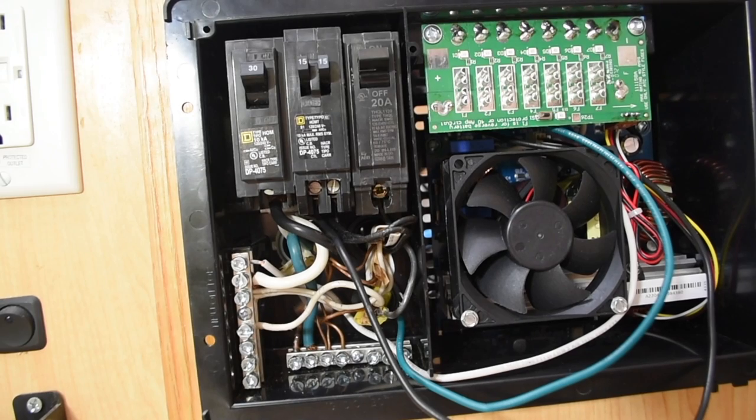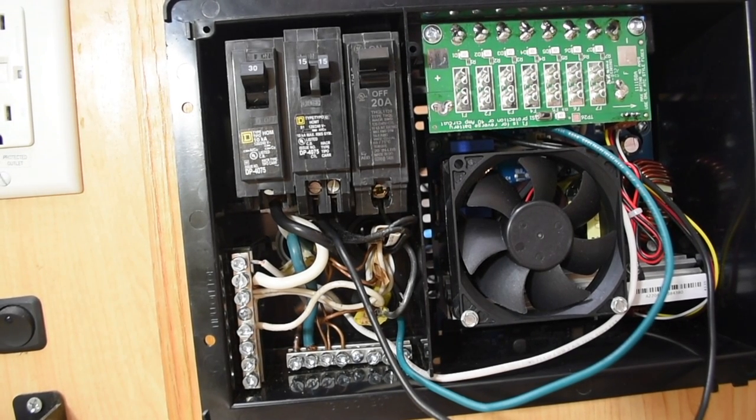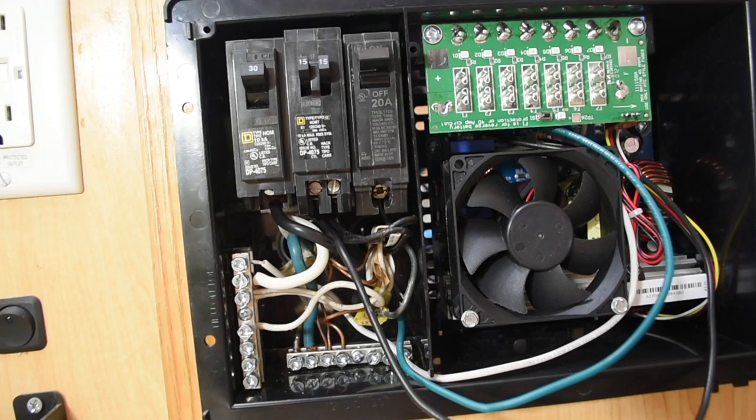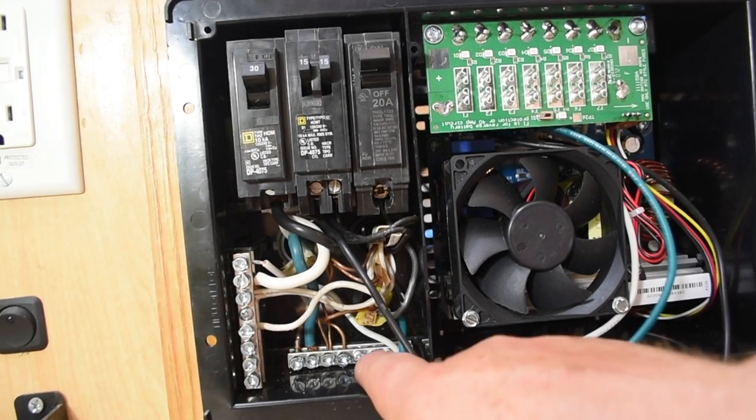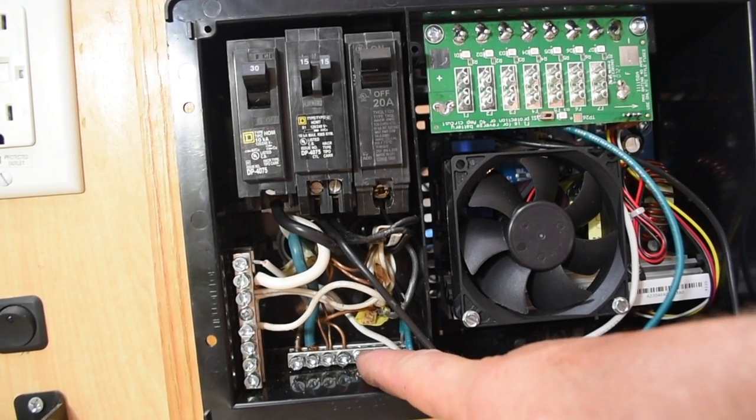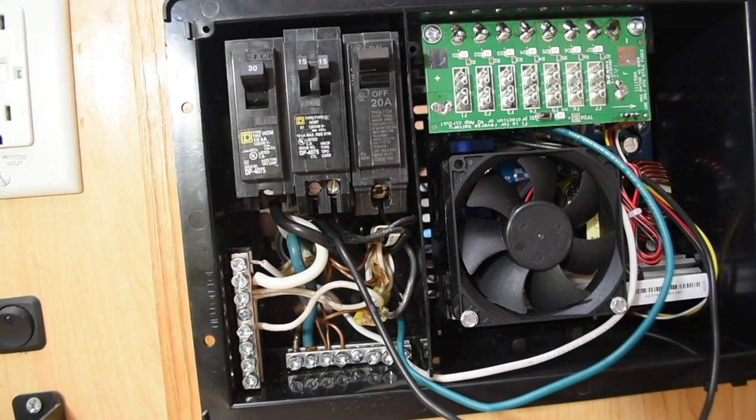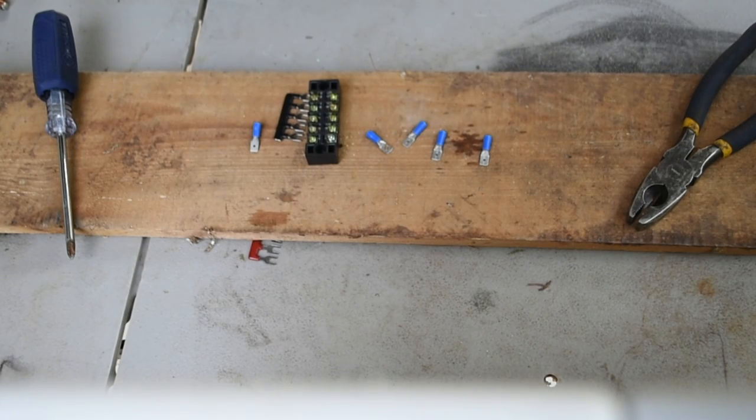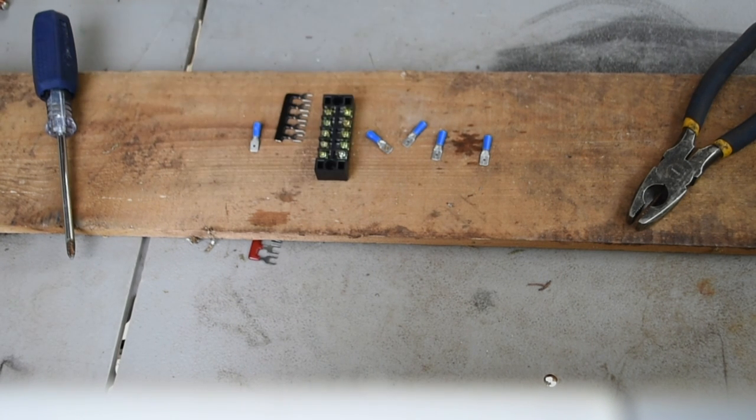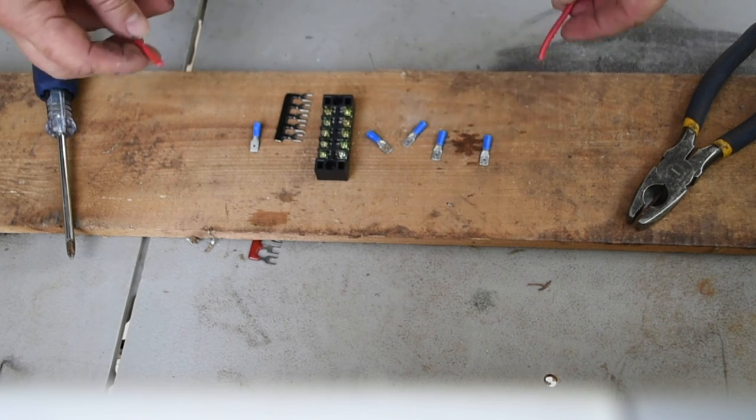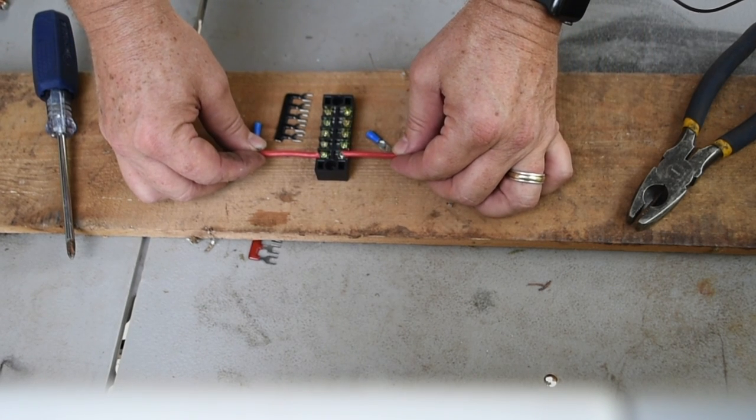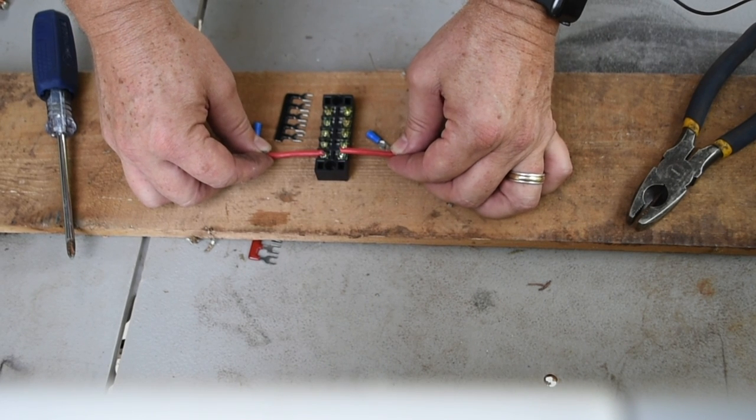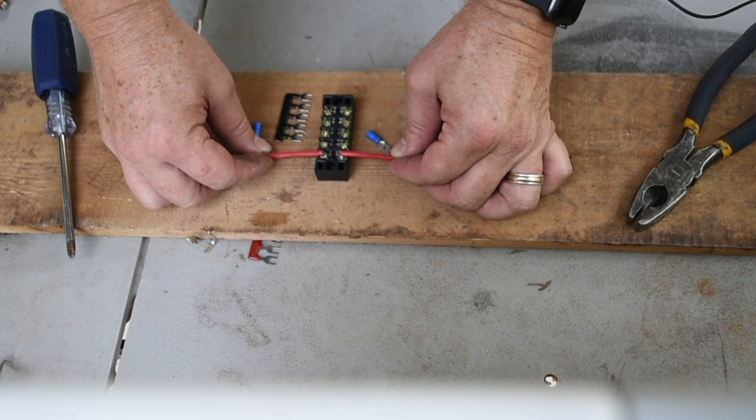So I finished up on the AC side and next is to tie in the DC side neutral to the bus bar. We'll tie it in here on the front at the bottom and we're going to add a new bus bar to the system to clean up that wire nutted wire mess in the back.